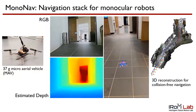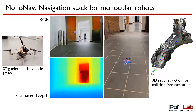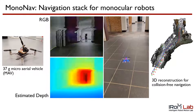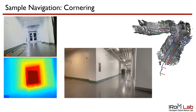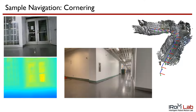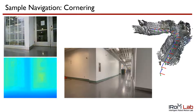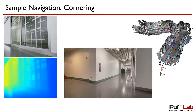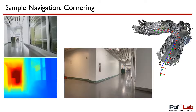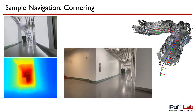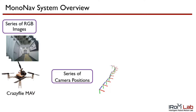Here, we see MonoNav navigating a hallway with a curved wall on the left and furniture ahead. In another example, MonoNav successfully navigates a corner at 0.5 meters per second. In real time, MonoNav generates a 3D reconstruction which it uses for planning.